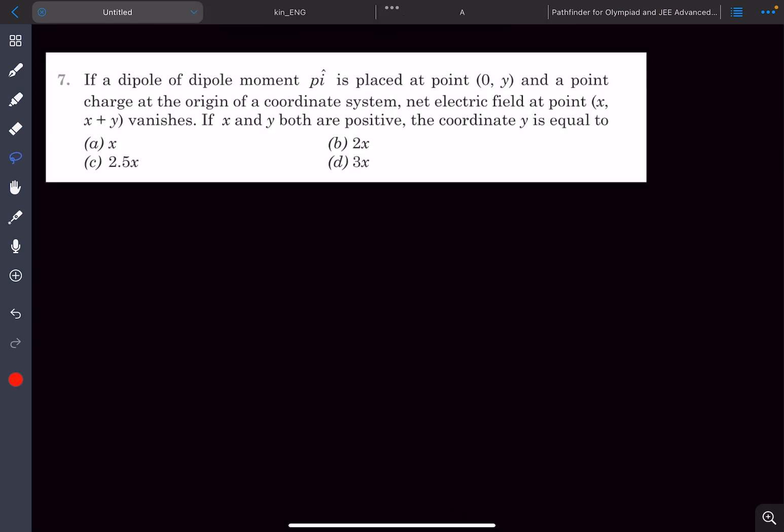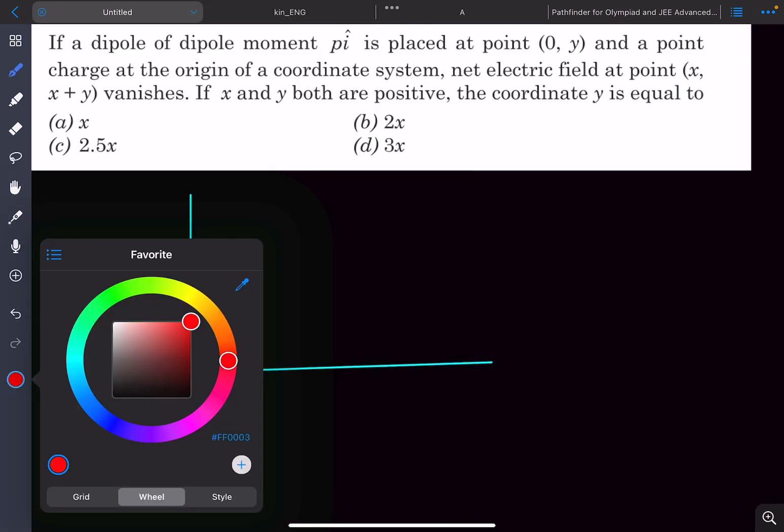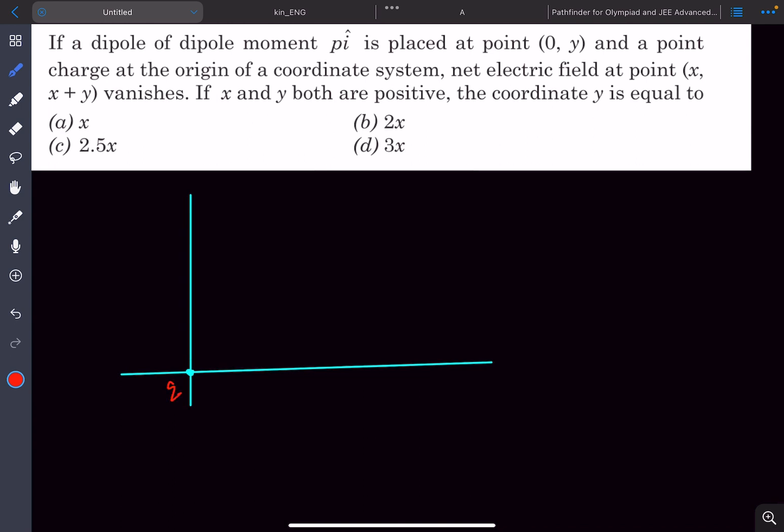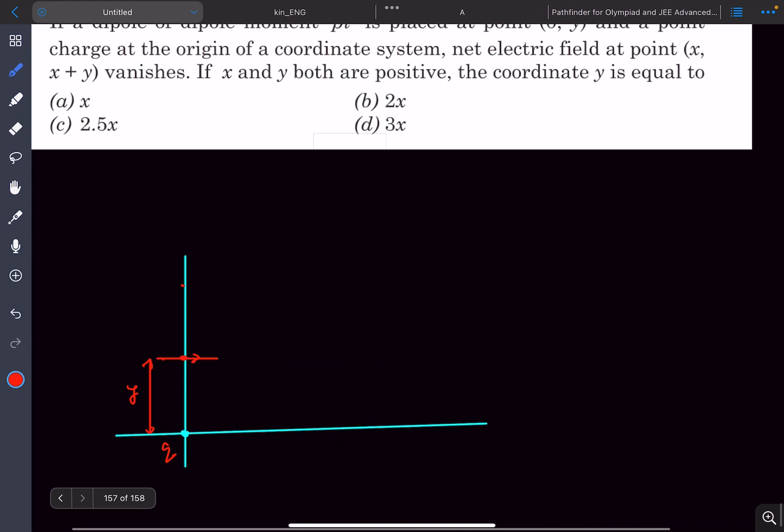Now moving on to problem number seven. So in this question, point charge Q is kept at the origin and we have a dipole that is placed at a distance of y from the x-axis and the dipole's direction is along the x-axis. At this point whose coordinate is x, x plus y, it's given that the electric field due to this dipole plus the charge is zero. So if I join these two lines from the center of the dipole to the point and let's say this angle is theta, there will be two components of electric fields due to the dipole.